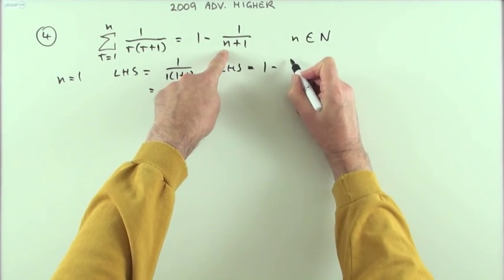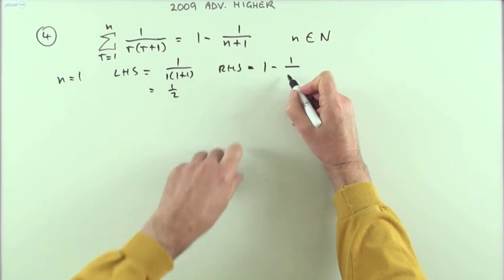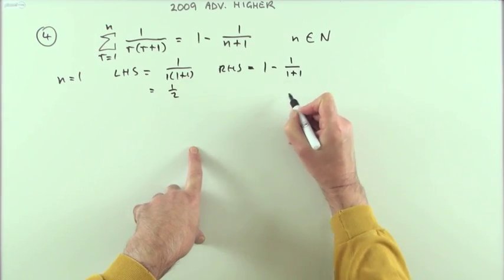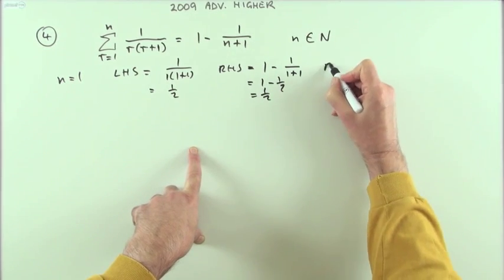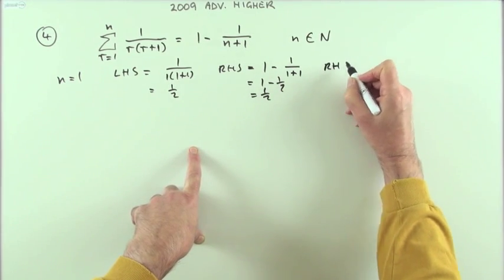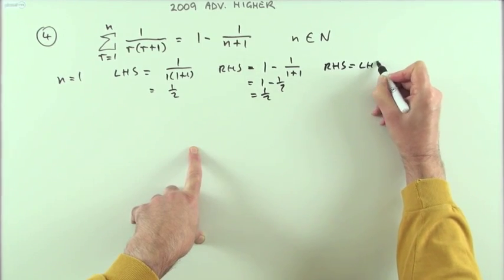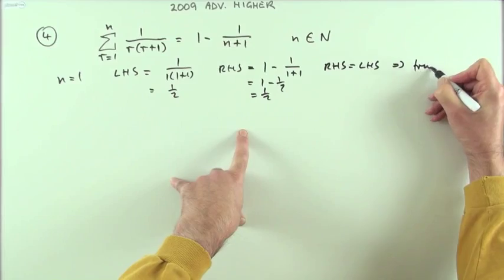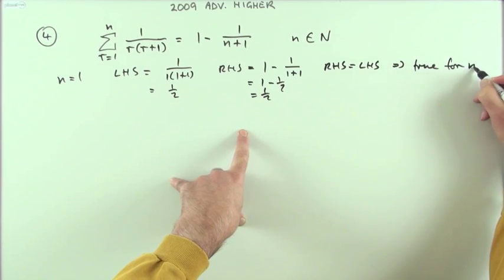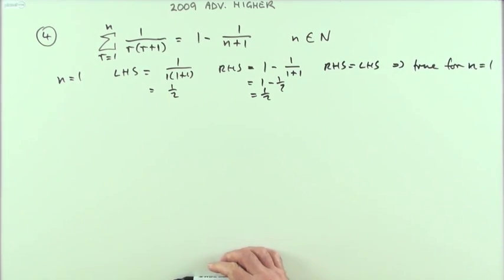Test the right-hand side of it. If n is one, it'll be one minus one over one plus one, which is one minus a half, which is a half. The right-hand side is the same as the left-hand side, which means it's true for n equals one.